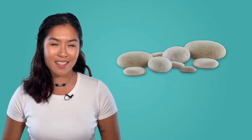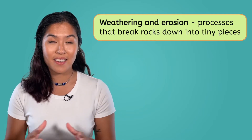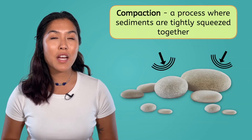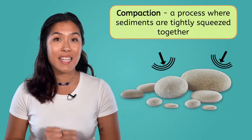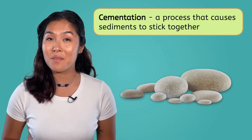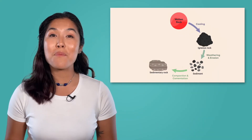There are a few different processes that can change igneous rocks. Over many, many years, forces like wind and water might break the igneous rock down into tiny pieces. This process is a part of the rock cycle called weathering and erosion. When rocks are weathered and eroded, they become sediments. And over time, a process called compaction can tightly squeeze these sediments together, while another process called cementation can cause them to stick together. Together, compaction and cementation form sedimentary rocks from sediments.